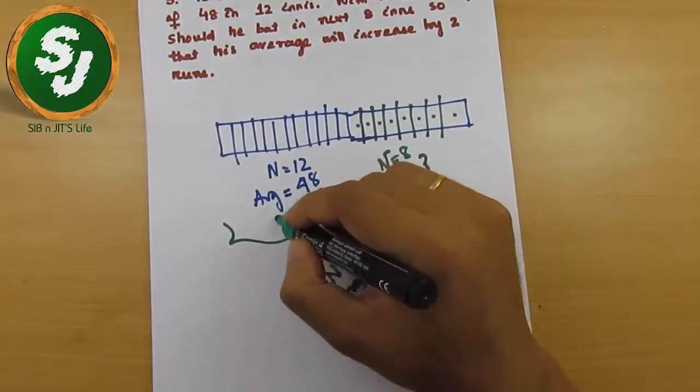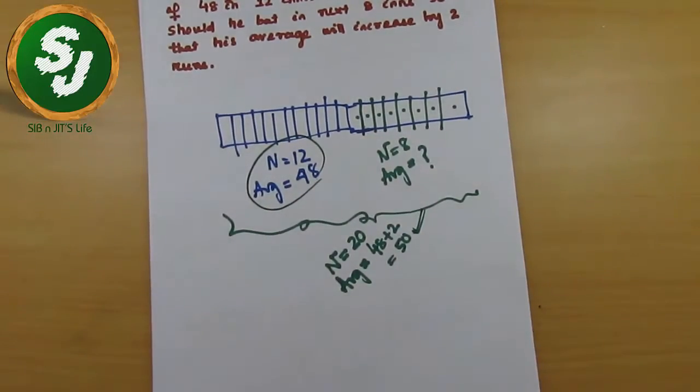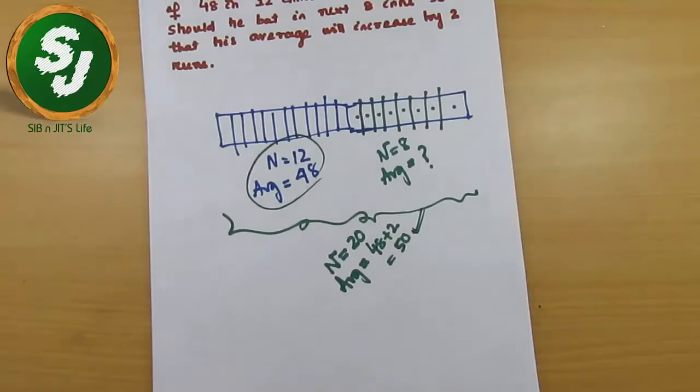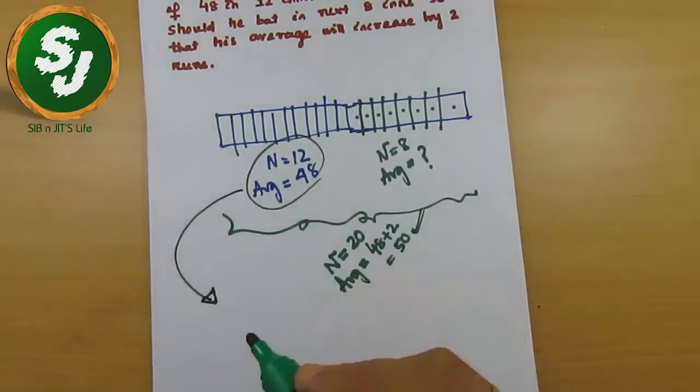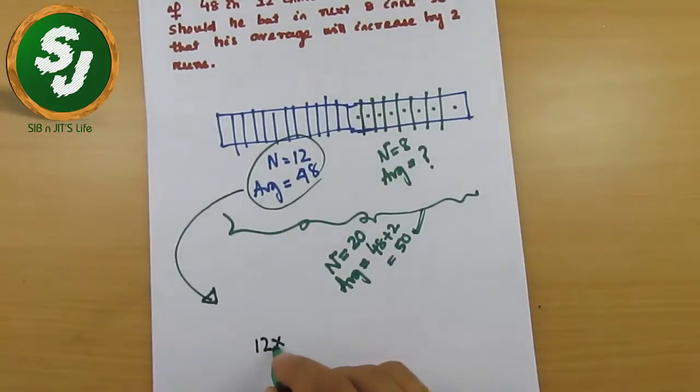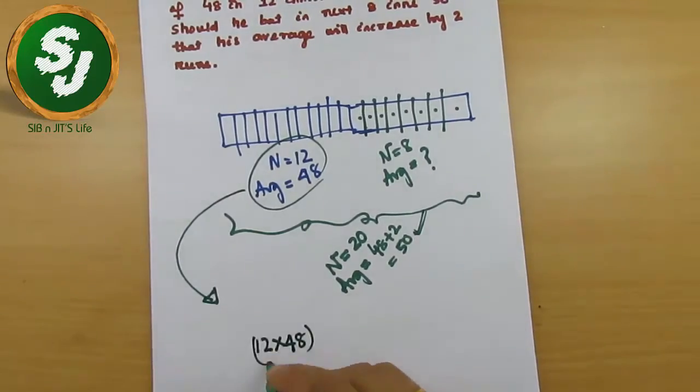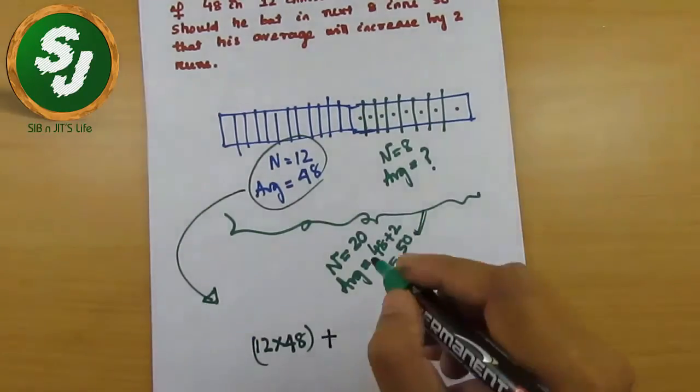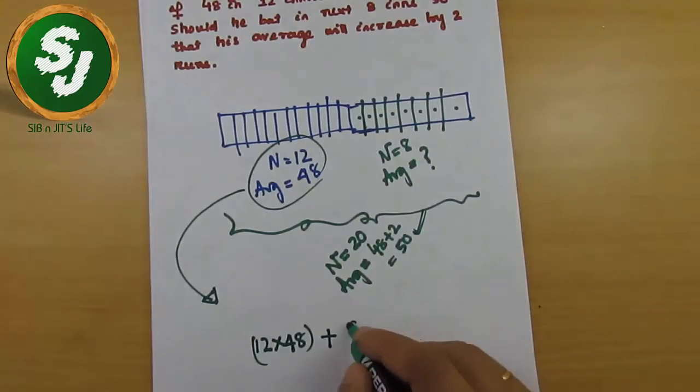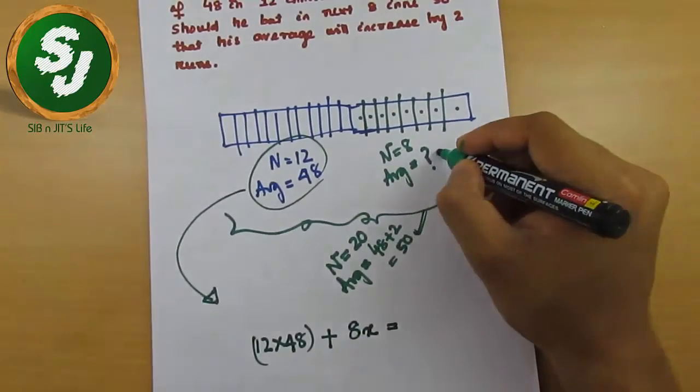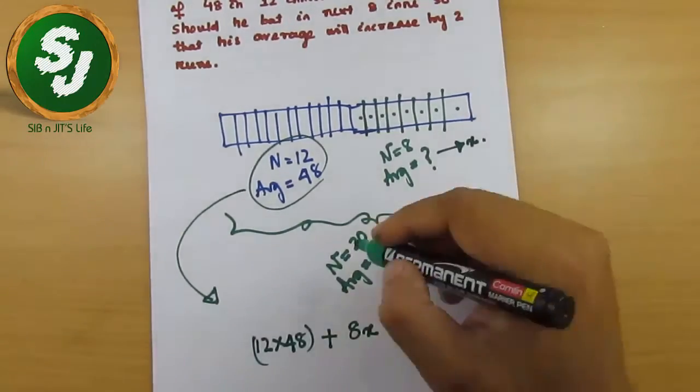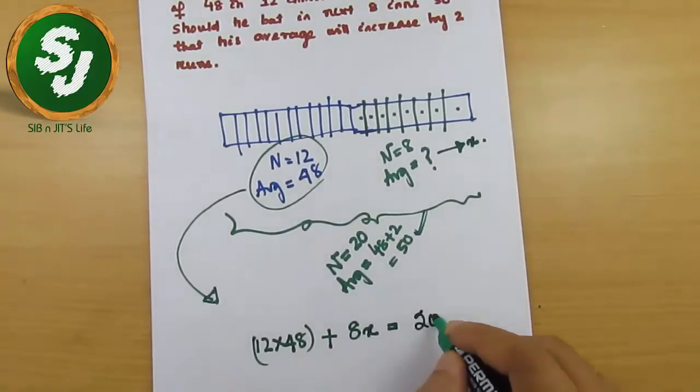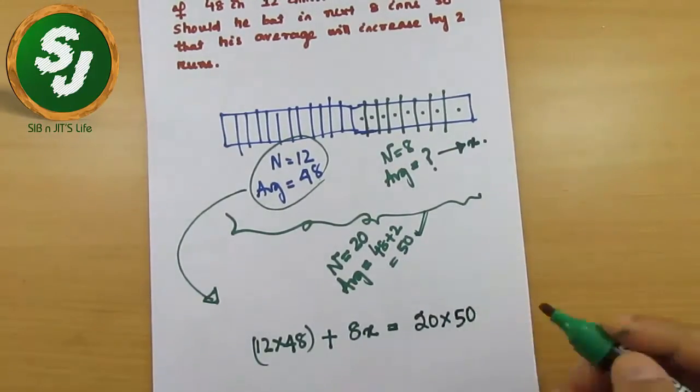As I told you, N and average is given. It is indirectly a hint to multiply and find the value of the sum. So the sum of these 12 innings of Sachin Tendulkar is 12 into 48. This plus next 8 matches, plus 8 into x because I do not know the average, so I put this value as x. Plus 8x equals 20 into 50.